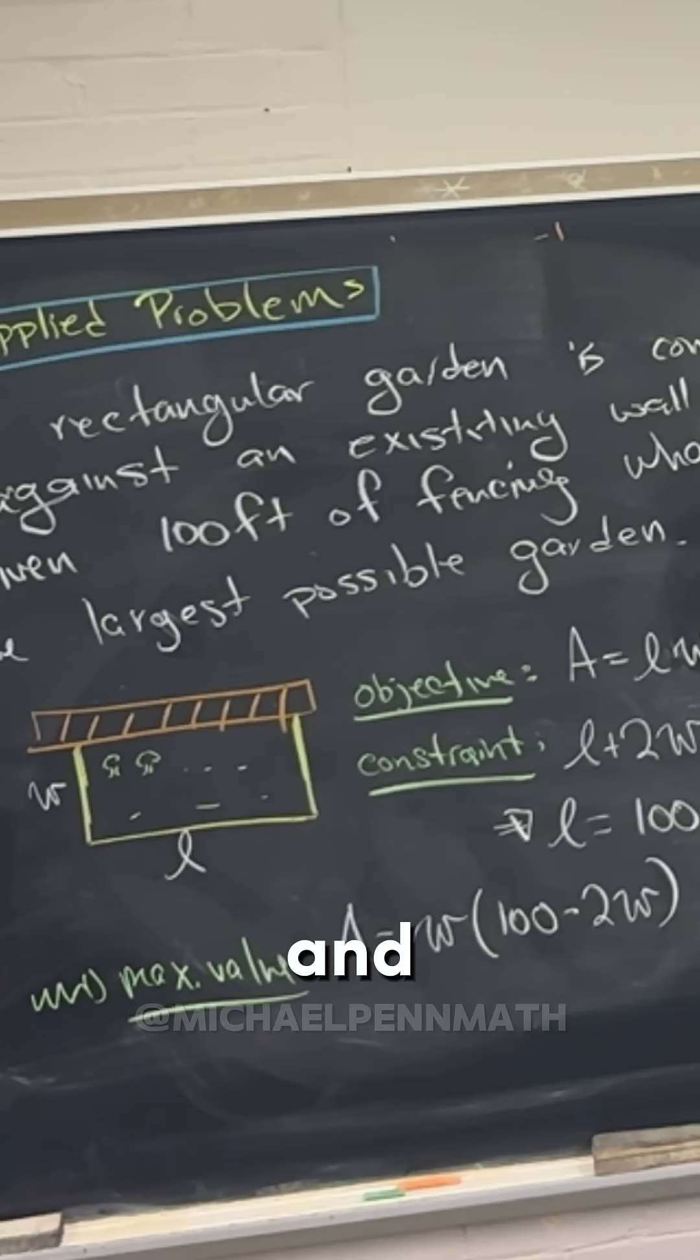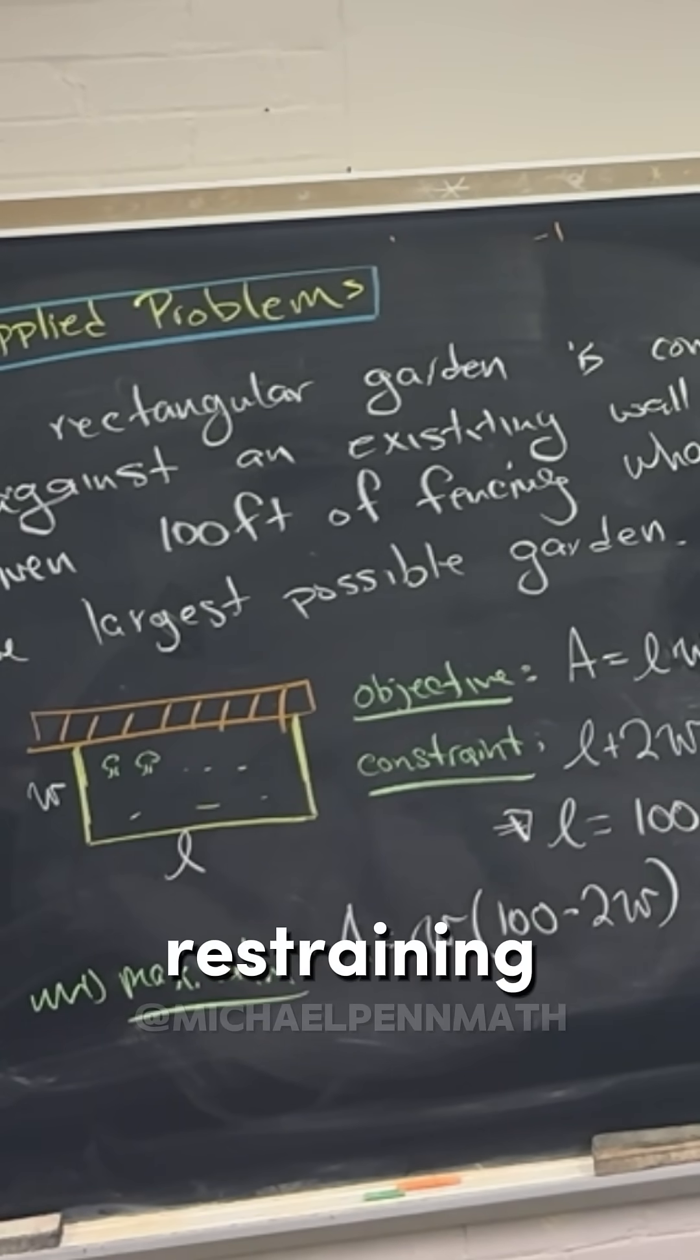And then, maybe while we're at it, we can approach this a couple of different ways. We can approach this without restraining W to an interval, or we can approach this with restraining the values of W.